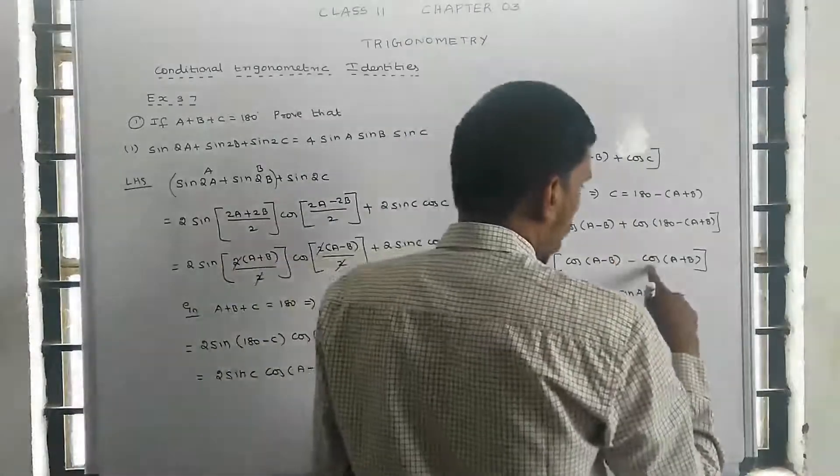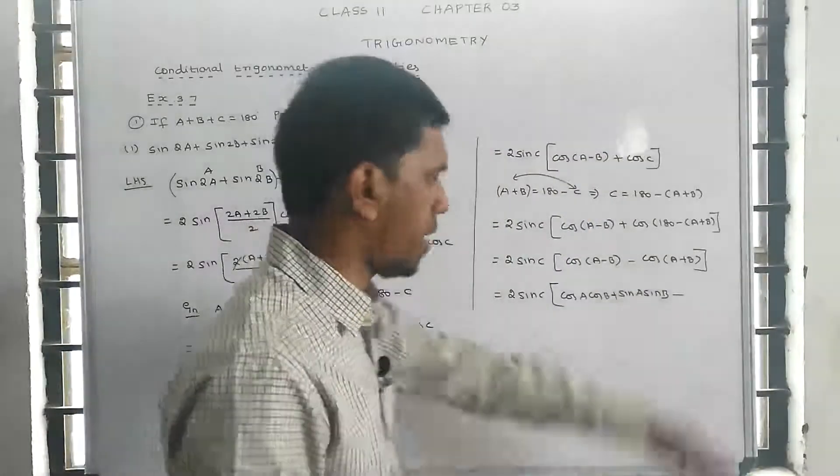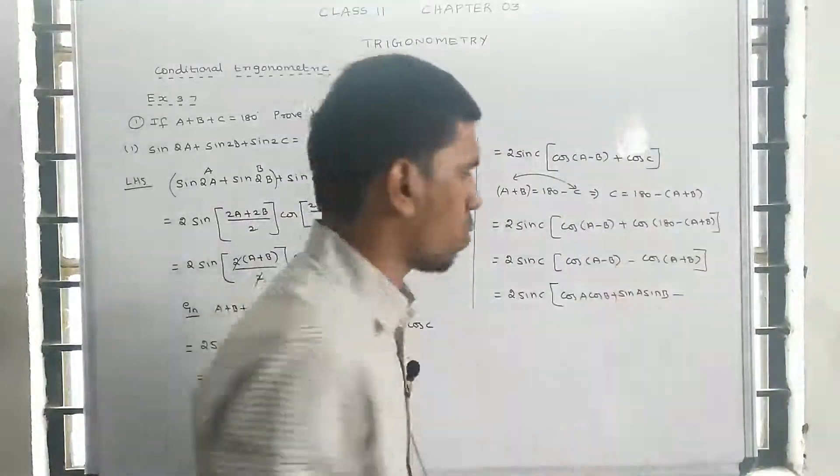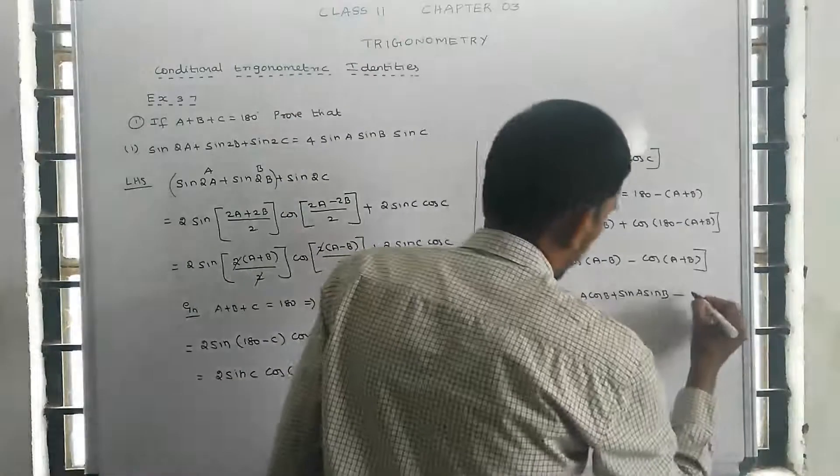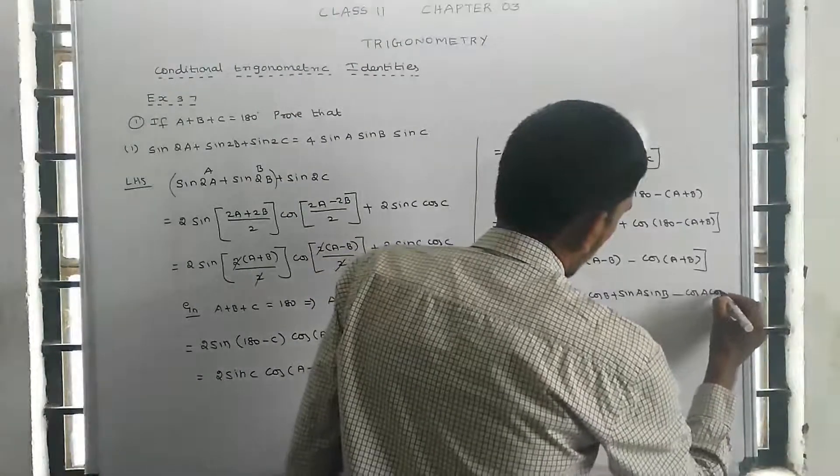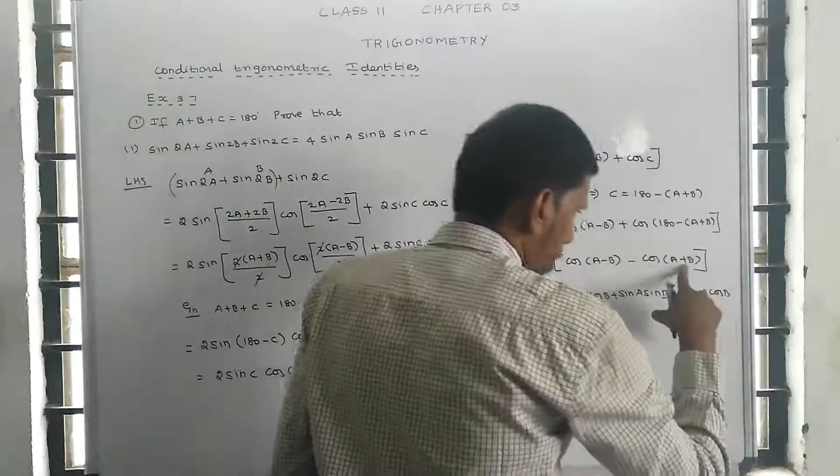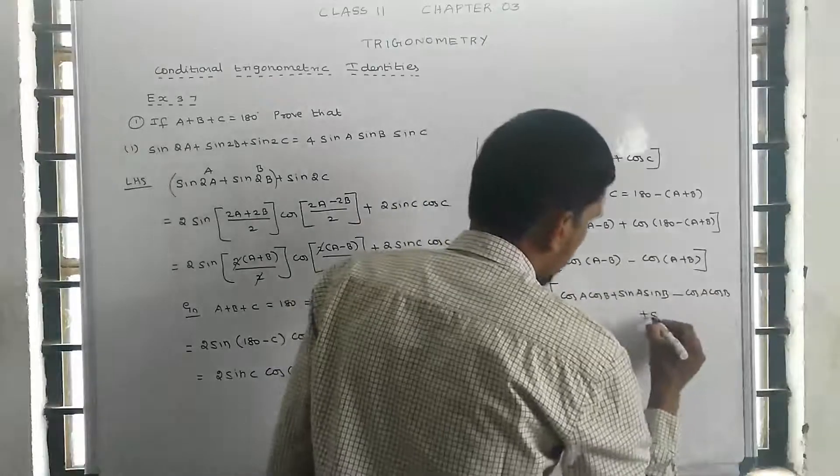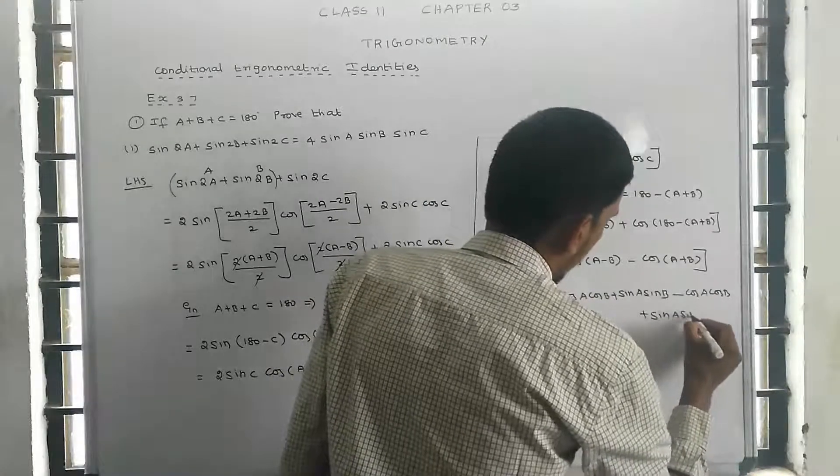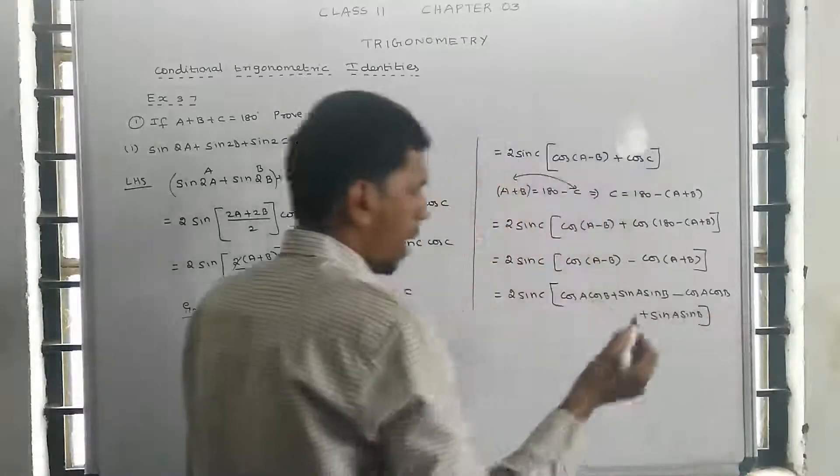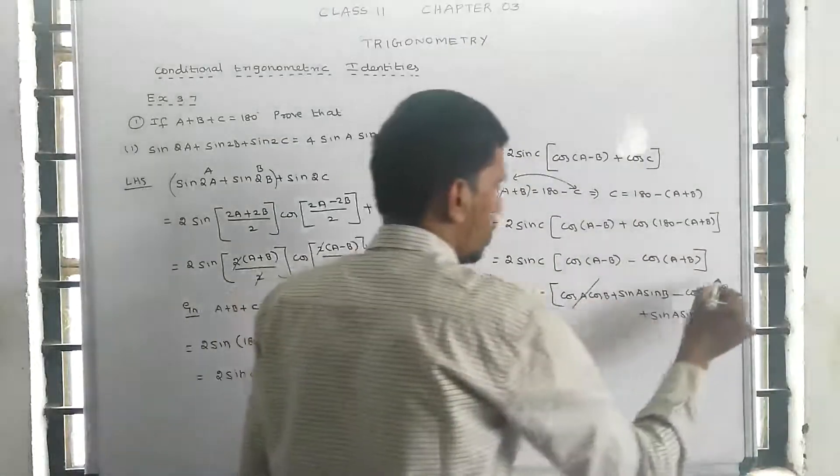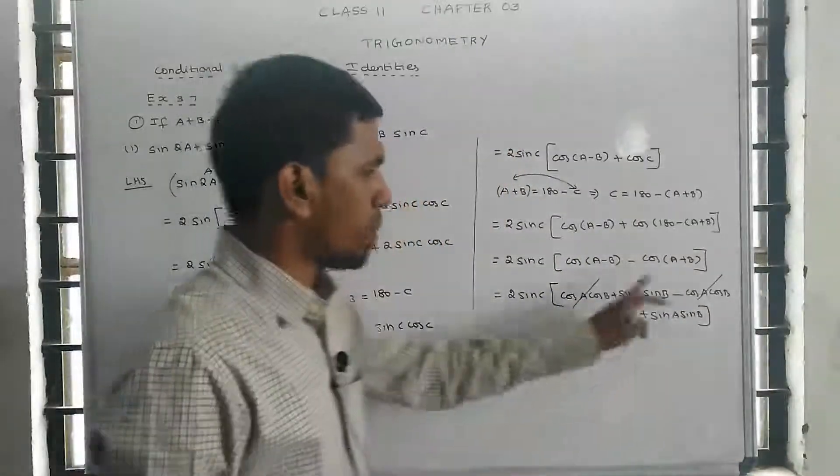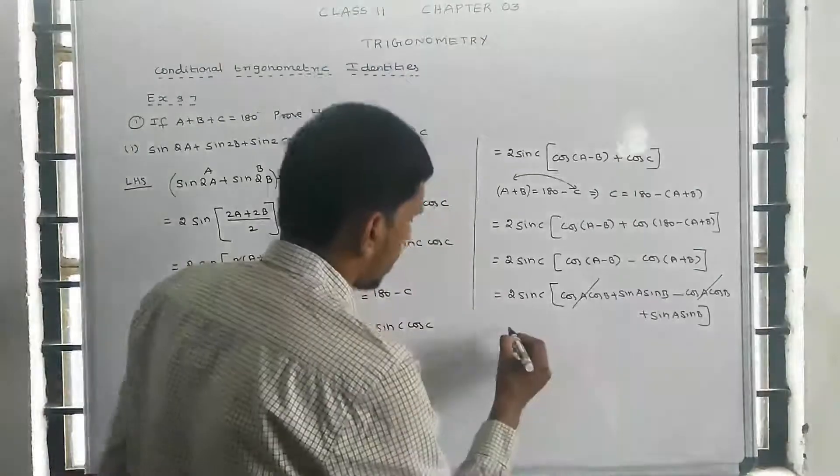So we have 2 sin c times [(cos a cos b + sin a sin b) - (cos a cos b - sin a sin b)]. The cos a cos b terms cancel, giving us 2 sin c times 2 sin a sin b.